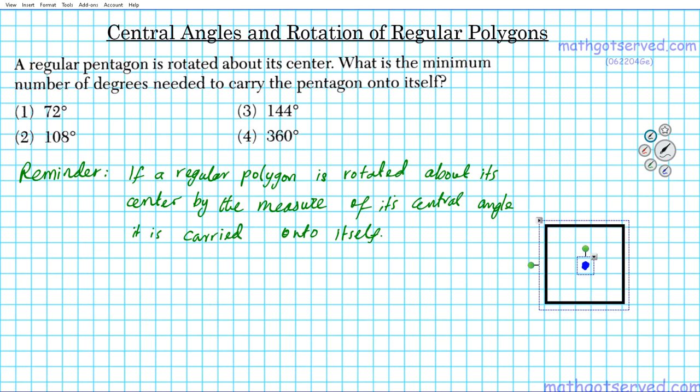So that's what this reminder is talking about. Now let's go ahead and formulate a strategy for this problem. Here we have a regular pentagon rotated about its center. What's the minimum number of degrees to carry it to itself? So what is this question actually asking us to find? What is the connection here between the minimum number of degrees and the rotation about its center to map it to itself?